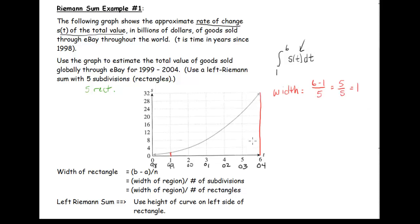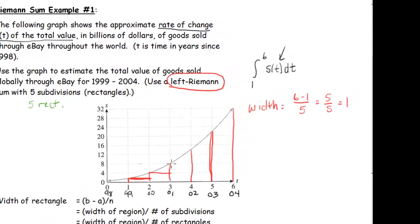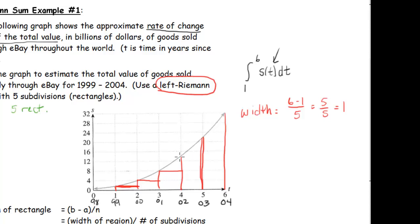We're using a left Riemann sum, so the height of each rectangle is the height of the curve on the left side. The heights are drawn at t equals 1, 2, 3, 4, and 5. Notice we don't use the height at t equals 6 — we use the height at t equals 5 for the last rectangle. These are our five rectangles.